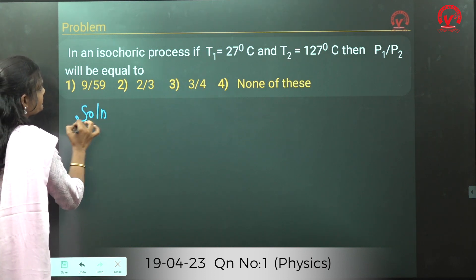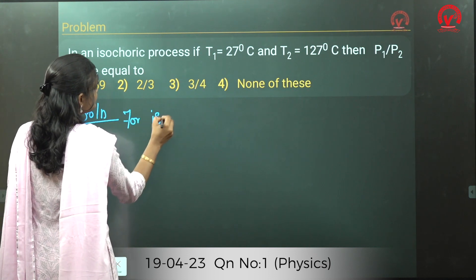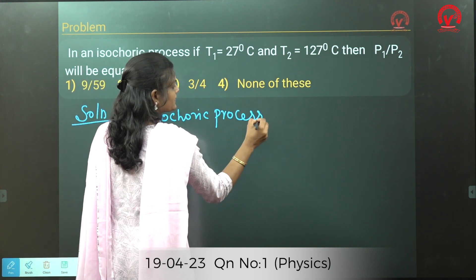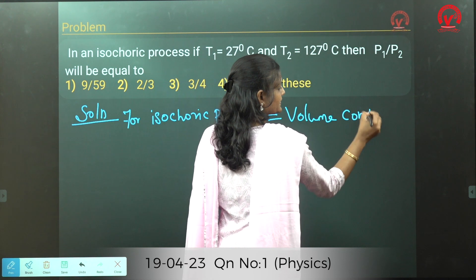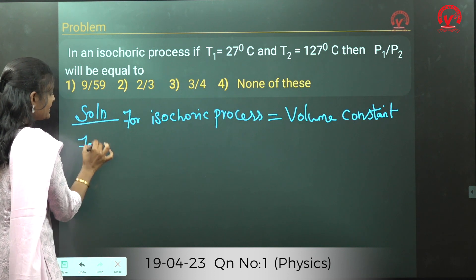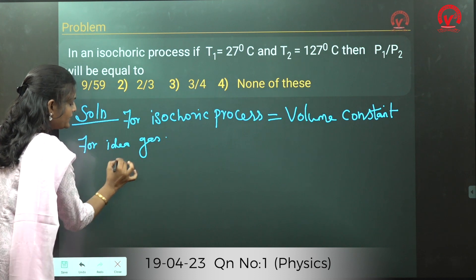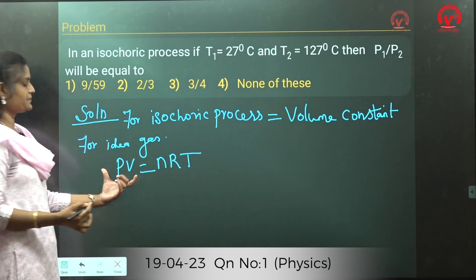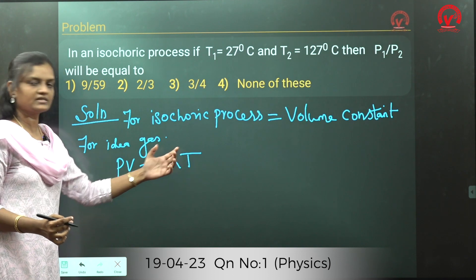For an isochoric process, volume is kept constant. For an ideal gas, the formula is PV = nRT, where P is pressure, V is volume, and T is temperature.